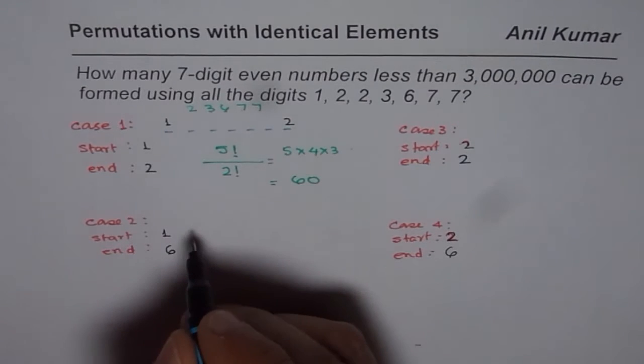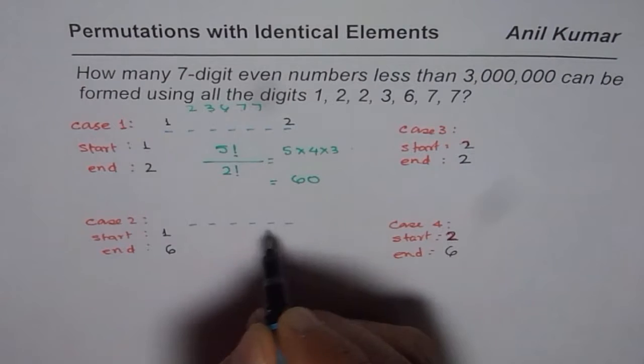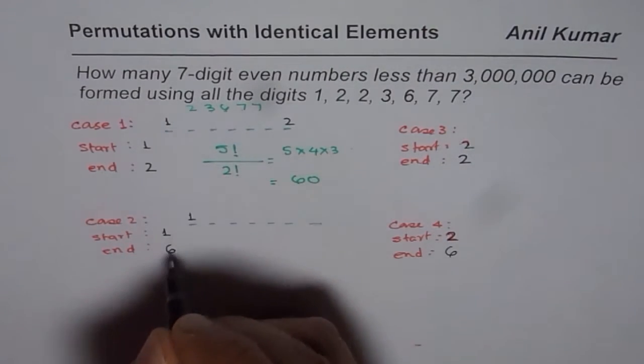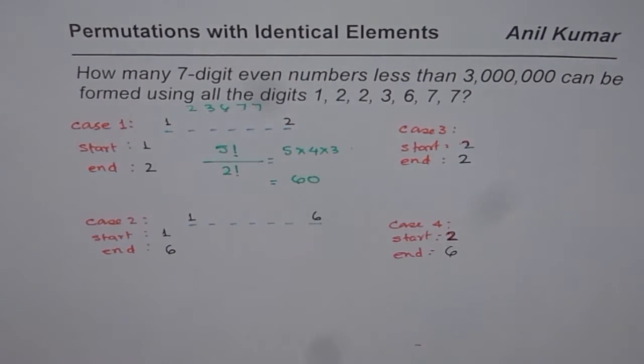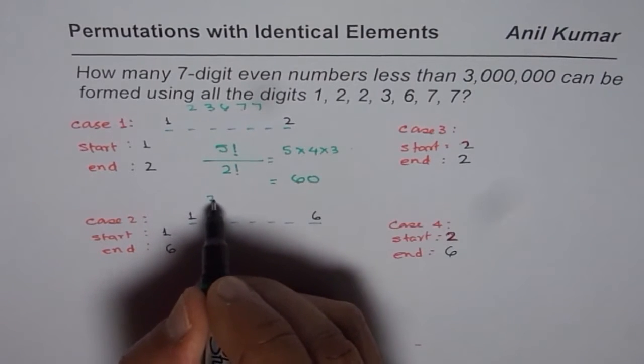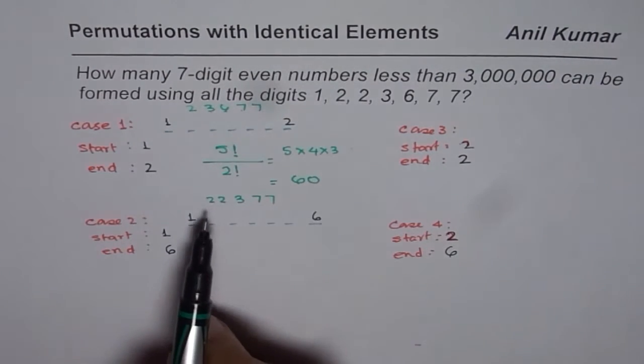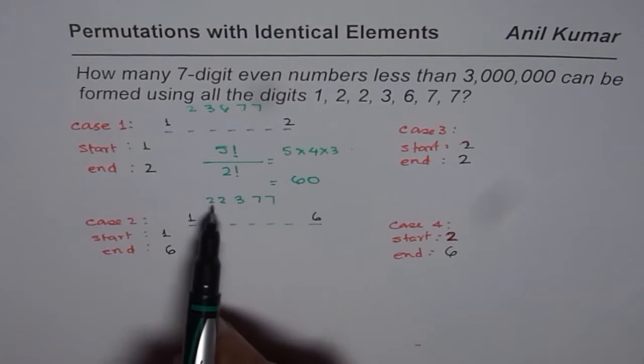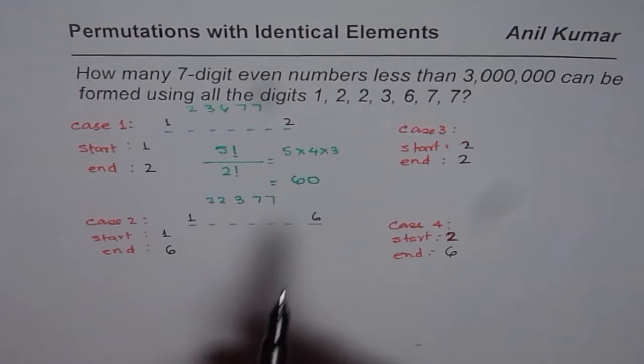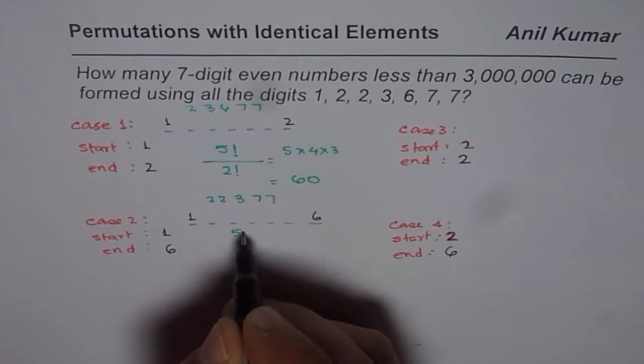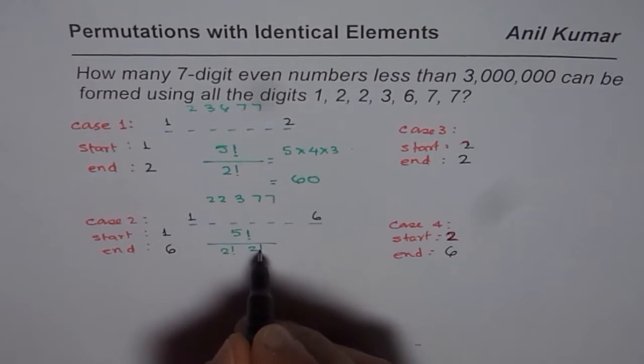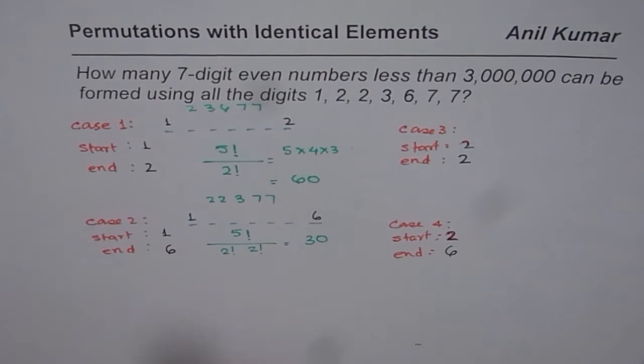Now in case 2, we again have a combination for 7 numbers: 1, 2, 3, 4, 5, 6, and 7. We have fixed first number as 1, the last number as 6. So the numbers which we can work with are, if we do not take 1 and 6 which are kept already, we are left with 2, 2, 3, 7, 7. So in this particular case, again, we have 5 numbers out of which there are 2 numbers which are repeating: 2 twos and 2 sevens. Therefore, this will result into 5 factorial divided by 2 factorial times 2 factorial. So that is half of 60 and that gives you 30 as your result.